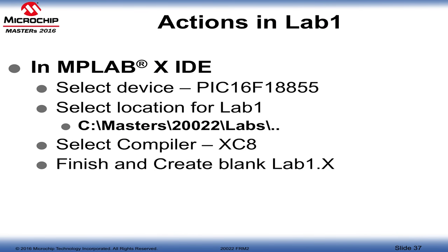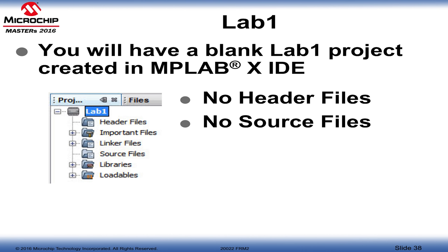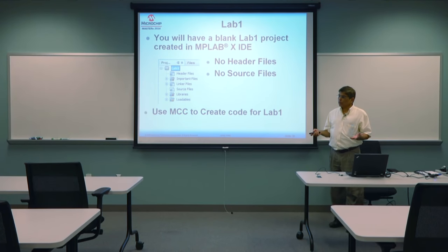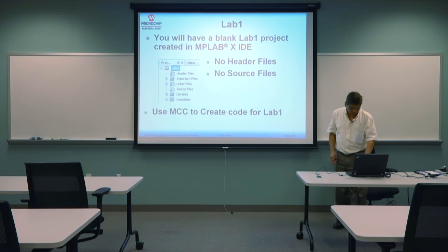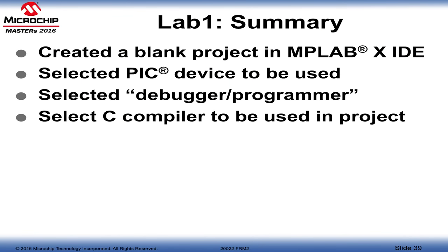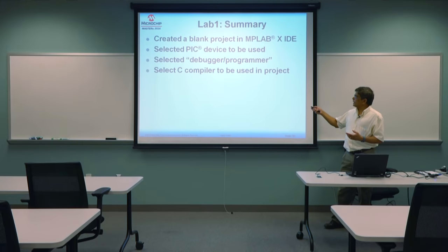Coming back to the presentation: we followed all the actions and created a blank project with nothing in the header files or source files. Now we're going to use MCC — MPLAB Code Configurator — to create code for our lab. The summary: we created a blank project using MPLAB X IDE, selected the PIC device, skipped the debugger since we don't have one, and selected the XC8 C compiler.